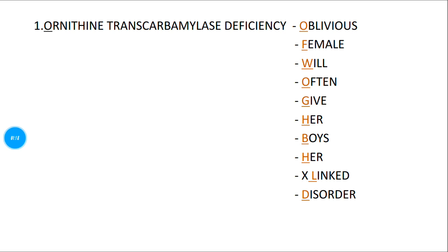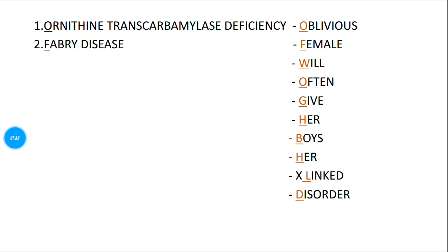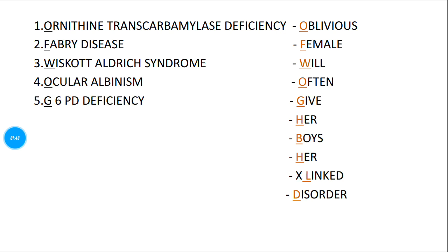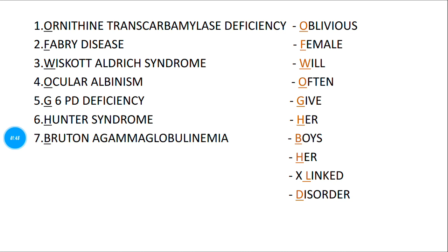The first letter O stands for Ornithine Transcarbamylase (OTC) deficiency. F stands for Fabry disease. W stands for Wiskott-Aldrich syndrome. O stands for Ocular albinism. G stands for Glucose-6-Phosphate Dehydrogenase (G6PD) deficiency.